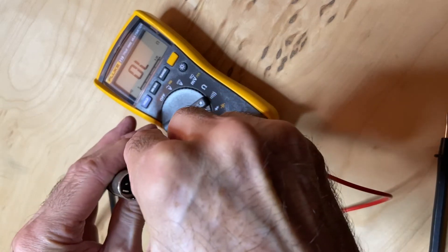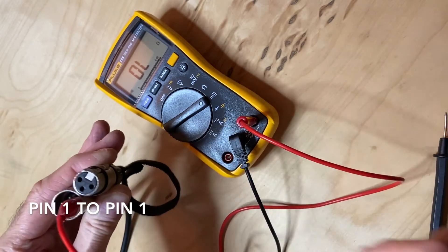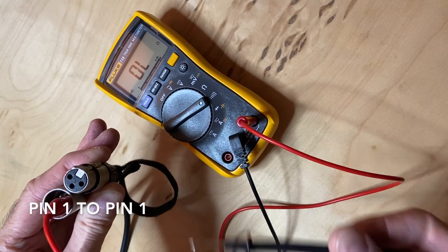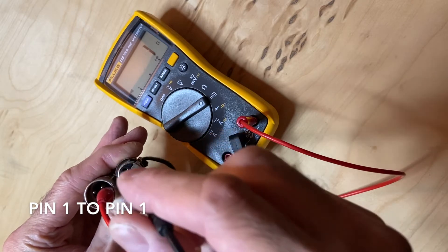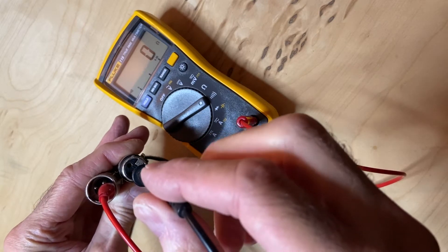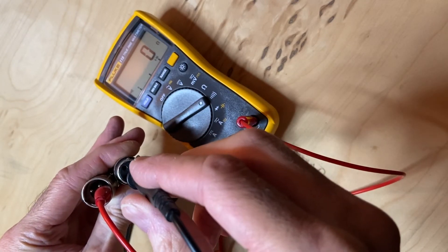We'll take an alligator clip and we'll put it on pin 1 on the XLR male. Then I'll take the probe end and I'll insert it into the hole for pin 1 on the female end. The beeping means we have continuity, which is good.